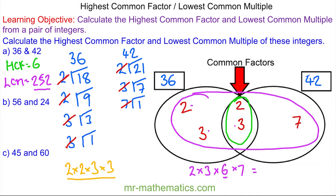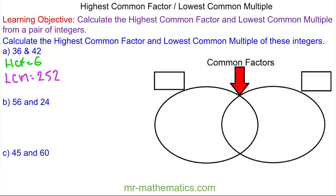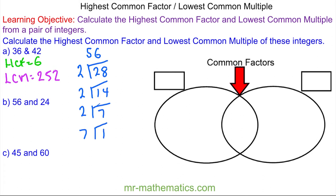Let's move on to question b. Again we start by working out the prime factors. For 56: 2 goes into 56 twenty-eight times, 2 goes into 28 fourteen times, 2 goes into 14 seven times, and 7 goes into 7 once. For 24: 2 goes into 24 twelve times, 2 goes into 12 six times, and then we have 3, and 3 goes into 3 once.